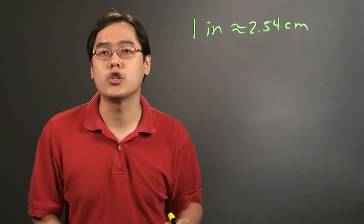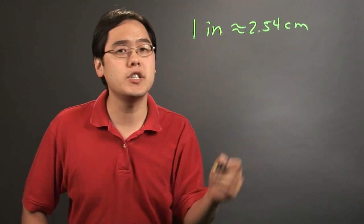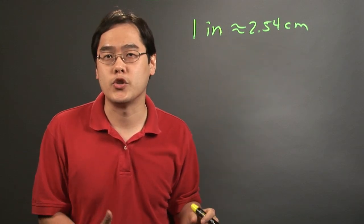We're talking about converting from English to metric units here. So if one inch is approximately 2.54 centimeters, you want to think about how this relates to millimeters.